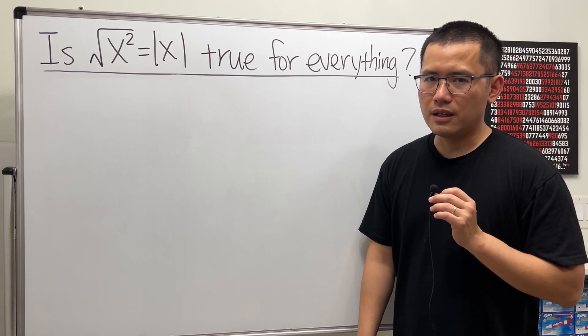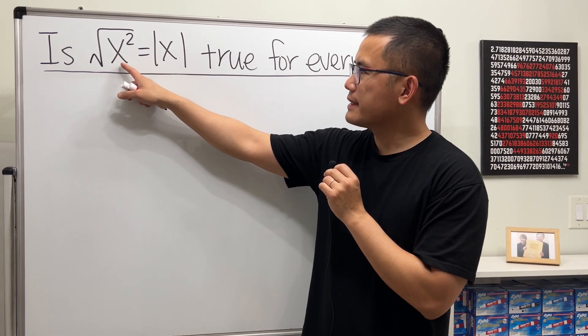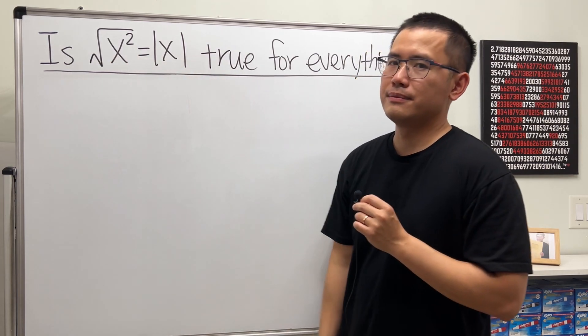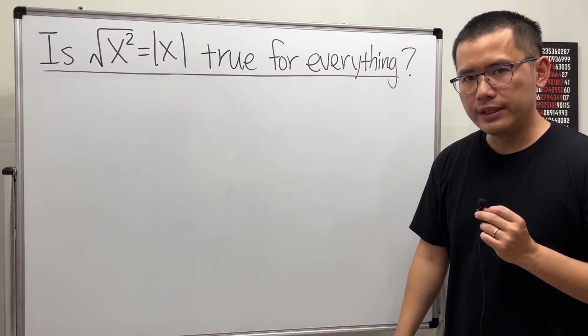Okay, today I just want to discuss a rather bizarre question with you, and that is: Is square root of x squared equals absolute value of x true for everything, including complex numbers?